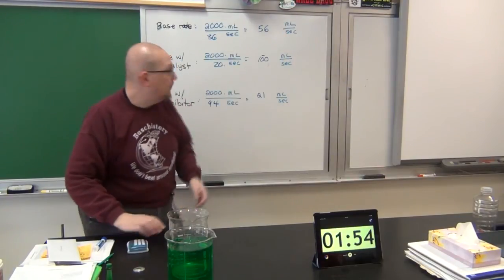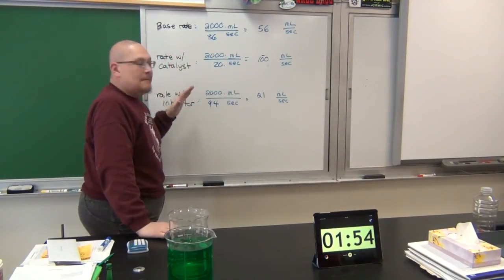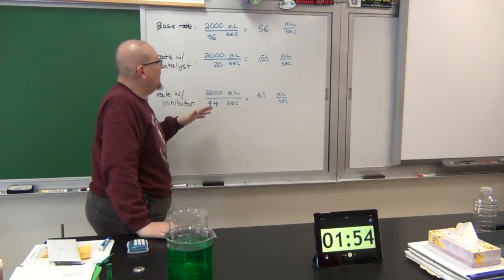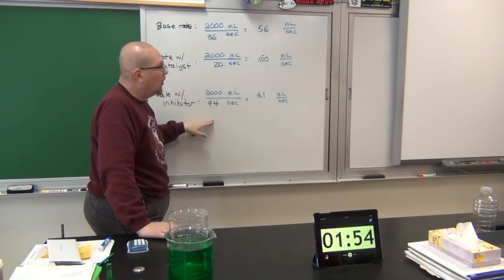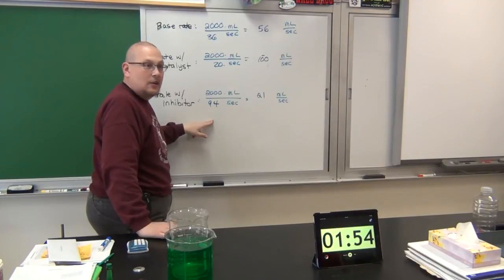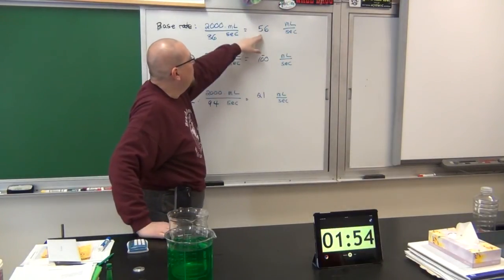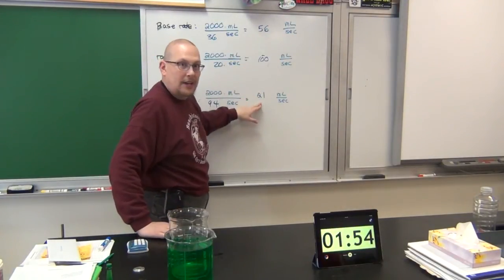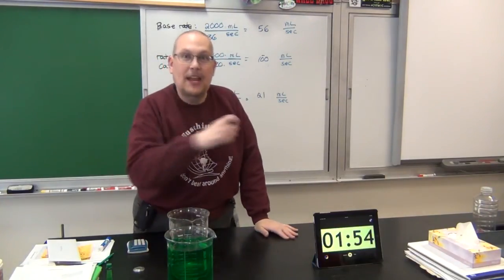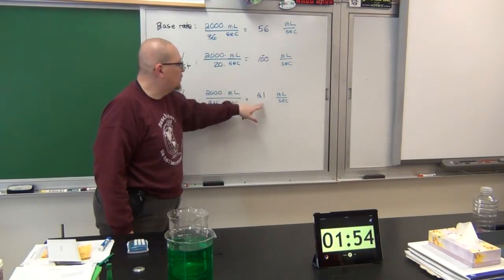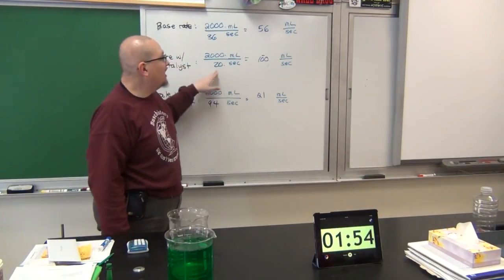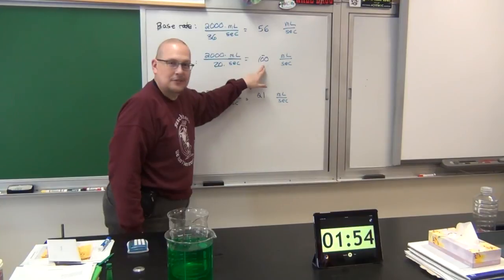So check it out. As the amount of time it takes increases, 20, 36, 94, the rate decreases, 100, 56, 21. Don't confuse time and rate. They're not the same thing. They're the opposite of each other. The more time it takes, the slower the rate. And the less time it takes, the faster the rate.